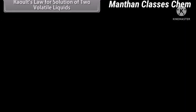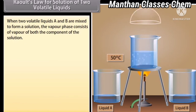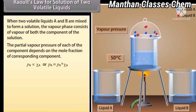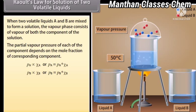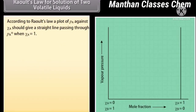Raoult's Law for solution of two volatile liquids: When two volatile liquids A and B are mixed to form a solution, the vapor phase consists of vapors of both components. The partial vapor pressure of each component depends on the mole fraction of the corresponding component: Pa = P°A × XA and Pb = P°B × XB. According to Raoult's law, a plot of Pa against XA should give a straight line passing through P°A when XA = 1.